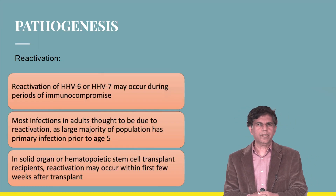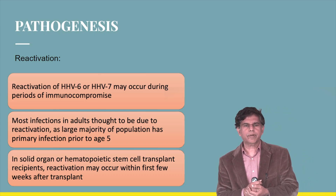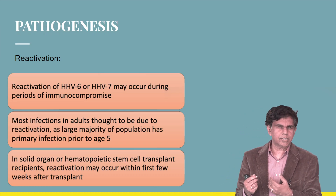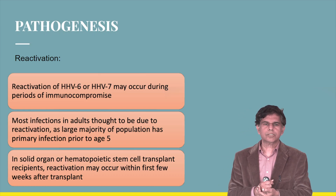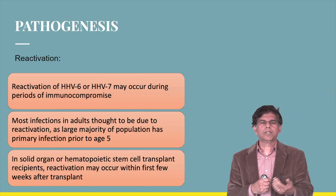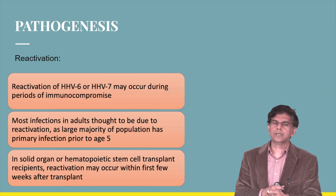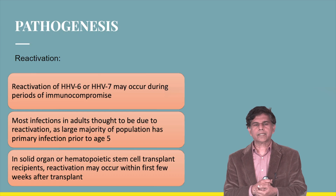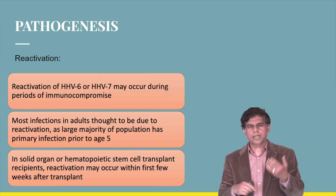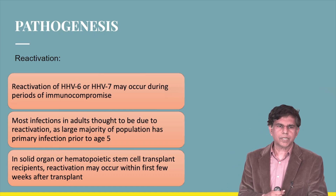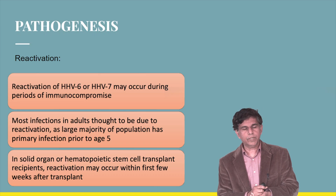Reactivation usually happens later in life, typically in an immunocompromised state. Most adult infections are due to reactivation, because the large majority of the population had a primary infection before age 5. In solid organ or stem cell transplant recipients, reactivation can occur within the first weeks after transplant, due to the immunocompromised status.